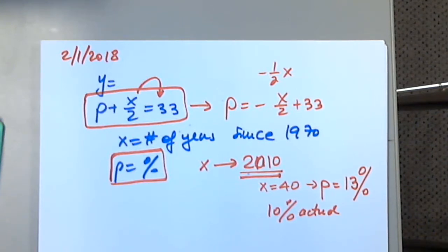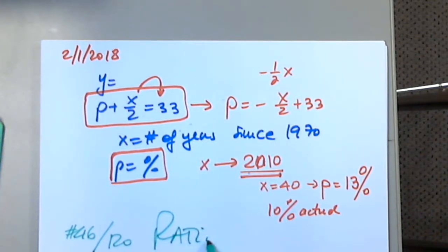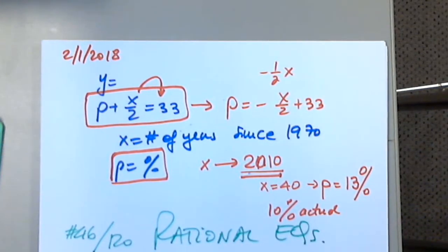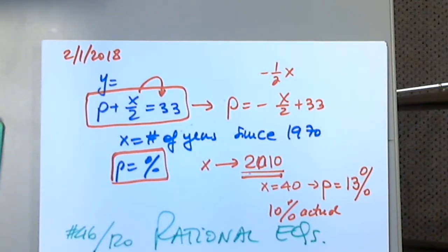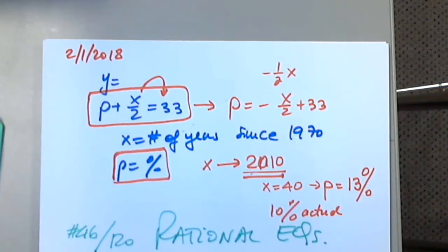We have not reviewed rational equations, so that's where we are right now, finishing up section 1.2. Let's look at a rational equation — problem 46 on page 120. Rational equations: 5 divided by (x plus 2) plus 3 divided by (x minus 2) equals 12 divided by (x plus 2)(x minus 2).